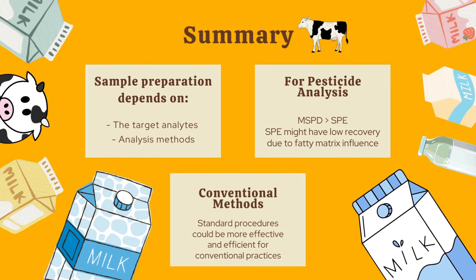As a summary, sample preparation depends on the target analyte and analysis method. For HPLC, conventional methods are appropriate. For pesticide analysis, MSPD is preferred over SPE, as SPE may have low recovery due to the fatty matrix influence. Conventional methods are considered most effective and efficient for conventional practices. That's all for this section.